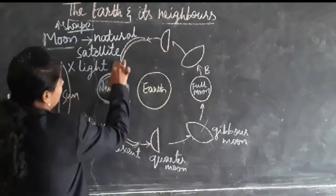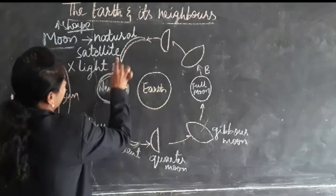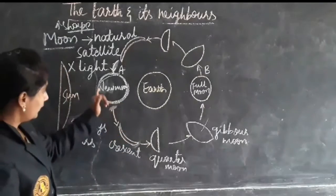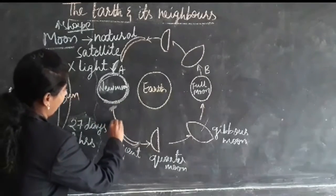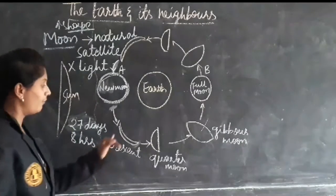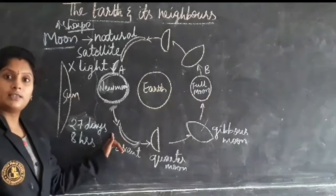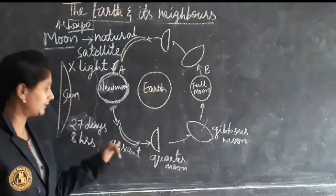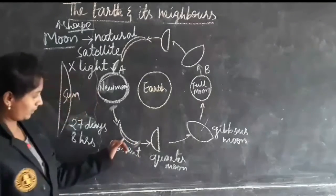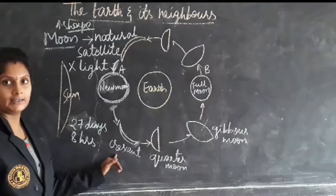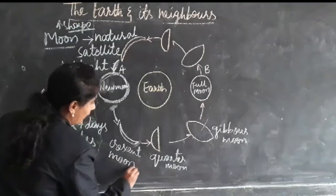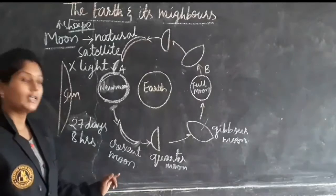After 2 to 4 days, we can see one shape in the sky — a curve shape. That shape we call it as a crescent moon.